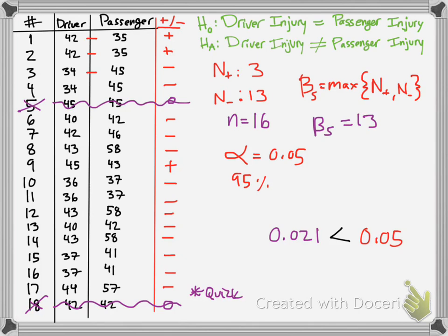I hope this helped in terms of checking out a quick sign test — if you just want to look at some data quickly and pick up on a few inferences to determine if there is a difference. Now, if you wanted to make this test stronger — say these drivers and passengers were in the same accidents, i.e., paired samples — you would do a different test for that, which would produce stronger results. But the sign test is just a quick nonparametric test for unpaired samples where you're just testing yes or no: is there a difference? We said yes — there seems to be a big difference and the passenger seems to be more affected. Hope this helped and happy studying!